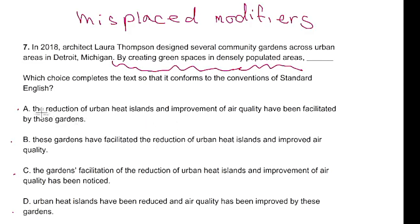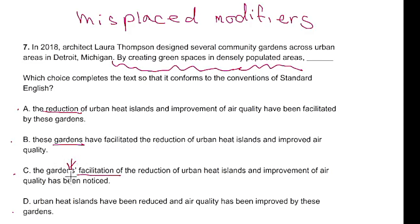I'm going to go through the answer choices and underline the subjects. A: The reduction of urban heat islands — 'of' tells me everything after it is modifying the subject, so reduction is our subject. B: These gardens have — so gardens. C: The garden's facilitation — gardens is possessive here, so facilitation is the subject because possessive words modify a noun. D: Urban heat islands — that's easy. So our four subjects are: reduction, gardens, facilitation, and urban heat islands.